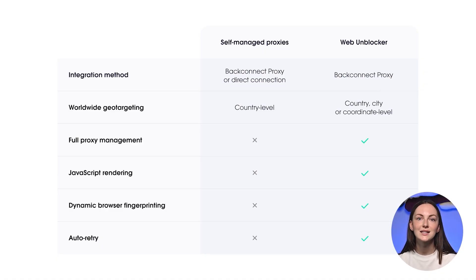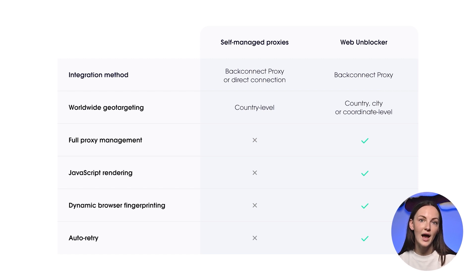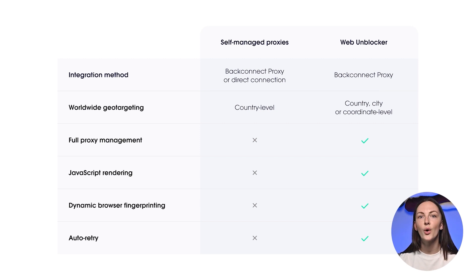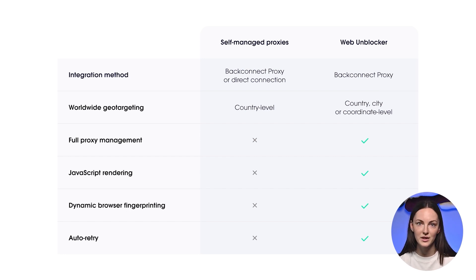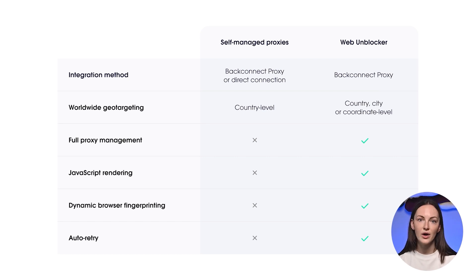First of all, WebUnblocker has a slightly different integration method. Self-managed proxies can be integrated with backconnect and direct connections, while WebUnblocker uses a backconnect proxy, granting it a single entry node. WebUnblocker also has more precise geotargeting that can be implemented on a coordinate level. One of its biggest advantages is that it takes away the hassle of proxy management – by leveraging machine learning, it takes care of proxies on its own. It also offers JavaScript rendering, ML-powered response recognition, dynamic browser fingerprinting, and an auto-retry function.